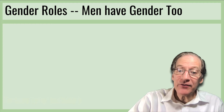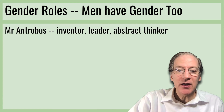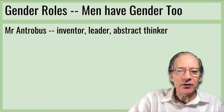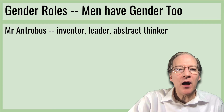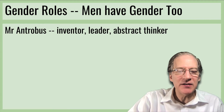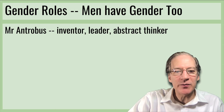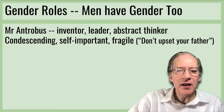Men have gender too. Mr. Antrobus is the archetype of the inventor, the leader — he spends his days thinking great abstract thoughts. But every time he commutes to the office, he's putting his life at risk in this fantasy setting that Wilder has presented.